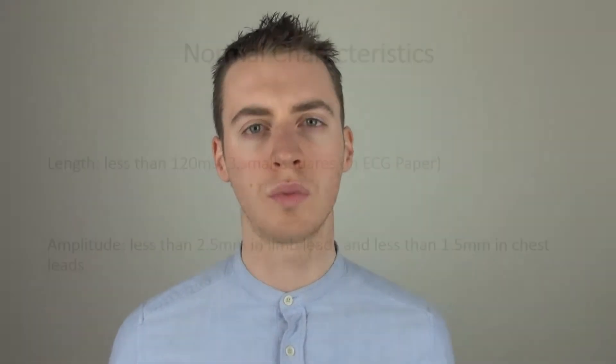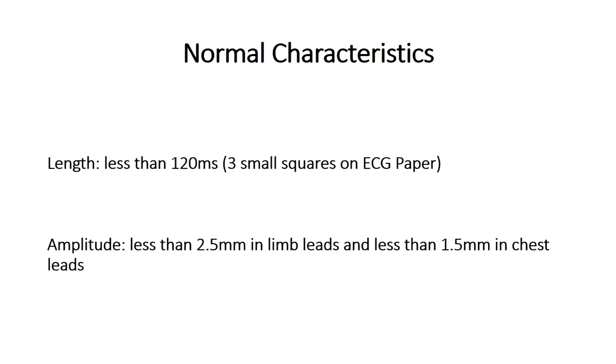Today we're going to talk about atrial depolarization and the P wave. The normal characteristics of the P wave are: it's less than 120 milliseconds in length, less than 2.5 millimeters in amplitude in the limb leads, and less than 1.5 millimeters in height in the precordial leads.